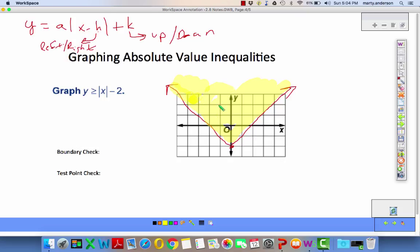A couple of these on your homework where they move you around a little bit. There you go. So the origin should work. Is zero greater than or equal to the absolute value of zero minus 2? Is zero greater than or equal to negative 2? You're darn right it is. And it works. It's right there. So we moved our two down.